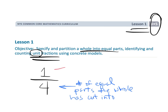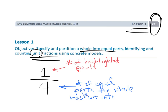The numerator is the number of highlighted parts — the number of parts we're talking about, the parts that were eaten, or the parts left over. In unit fractions the numerator is always one, and in fractions in general the denominator always means the number of equal parts the whole has been cut into.